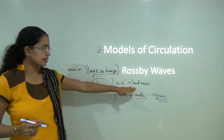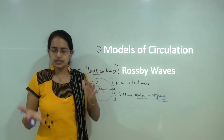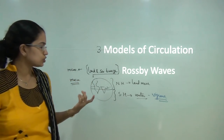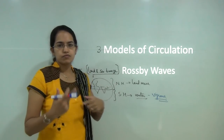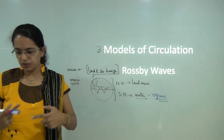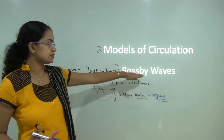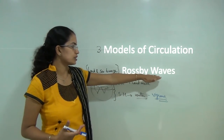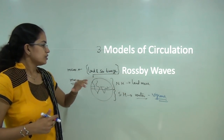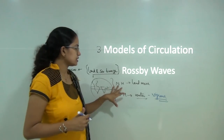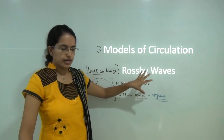In the northern hemisphere, the variations in temperature contrast lead to a decrease in the circumpolar vortex, which we would be discussing further as we go through the Rossby waves. This forms the basis of the circulation idea.